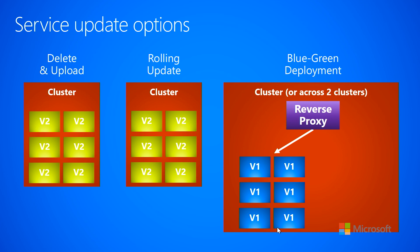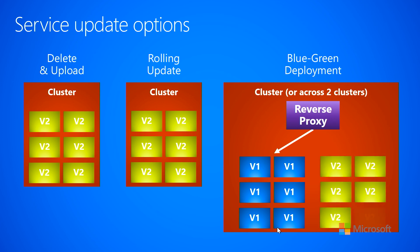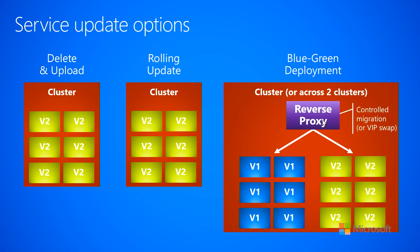Within this cluster, we can create six new instances running version two. After getting them up and running, we can configure the reverse proxy to do what's called a controlled migration — sending, say, 90% of traffic to V1 and 10% to V2. You can run like that for a while so 10% of your customers are hitting the V2 code base, and you can see if customers are happy with it. If they're unhappy, you can tell the reverse proxy to send all traffic back to V1.